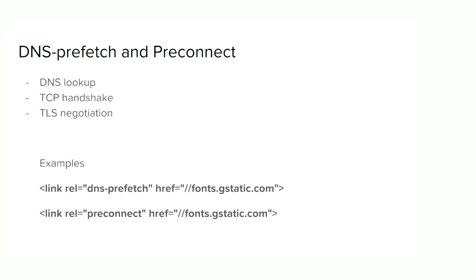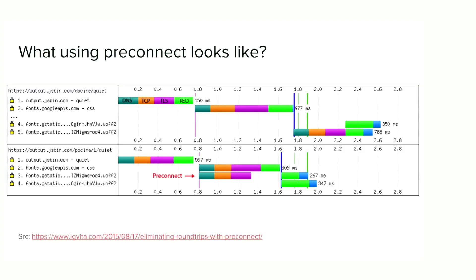If your site has resources coming from different origins — for example, a web font from fonts.gstatic.com — the browser has already connected to your server and fetched the HTML, but then it has to create a new connection to Google's servers, doing a DNS lookup, TCP handshake, and TLS negotiation. Those can be quite costly on slow networks. You can speed this up by telling the browser at the beginning of your HTML document to do the DNS lookup immediately, or to create the connection to that domain right away.